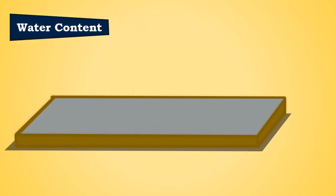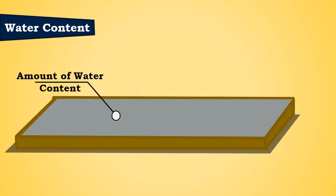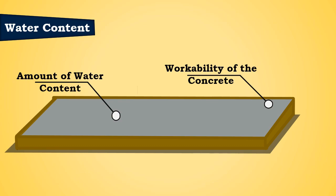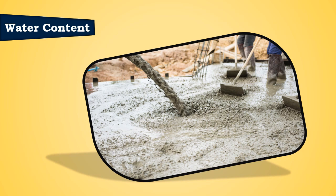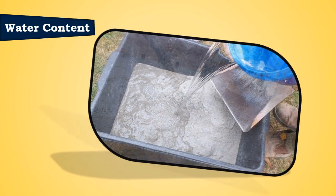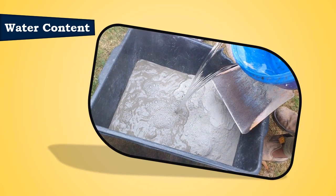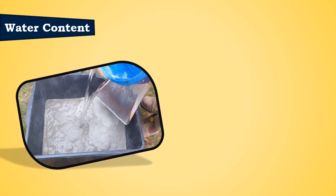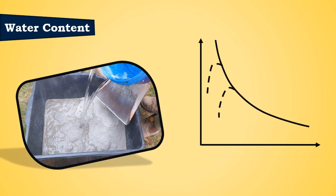Water Content. The amount of water content available in a volume of concrete will have a significant effect on the workability of the concrete. The higher the water content per cubic meter of concrete, the higher would be the fluidity of the concrete. In general, to increase the workability of the concrete at site, a certain amount of excess water is added. However, it should be noted that increasing the water content of concrete will have some effect on the strength of the concrete.